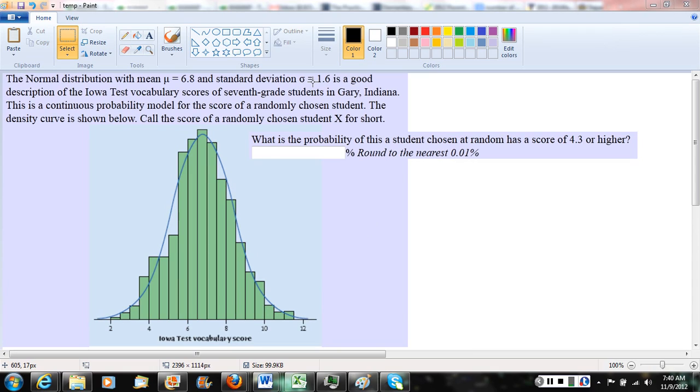They're drawing, sketching in the density curve above the histogram there, and they're saying we're going to call a random variable x to describe a student chosen at random. They want to know, if they choose the student at random from among all those who took the test, what's the probability that the student chosen at random has a score of 4.3 or higher?